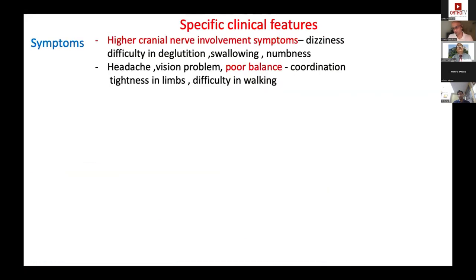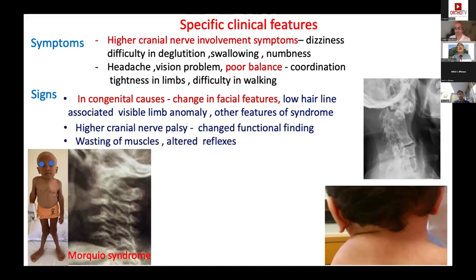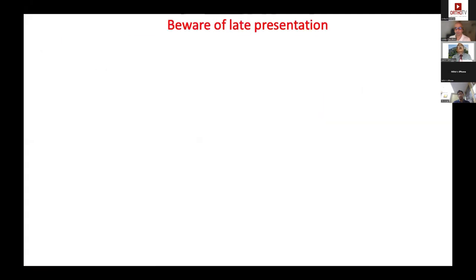These patients can present with high cranial involvement — difficulty swallowing, facial numbness, vision problems, poor balance, difficulty walking, limb tightness. Signs may include changed facial features in congenital/syndromic children, low hairline, visible limb anomalies, wasting, altered reflexes, spasm, pain, tenderness, and upper motor neuron signs.